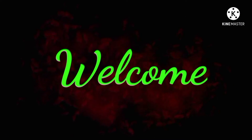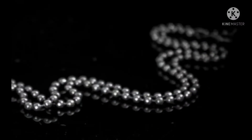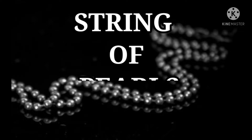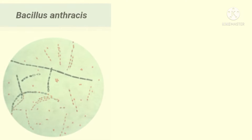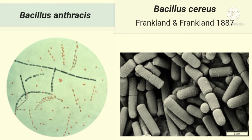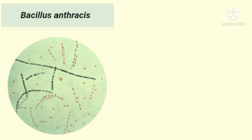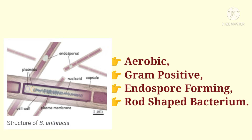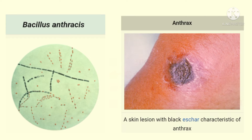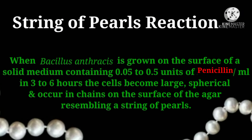Welcome. In this video we are going to see about the string of pearls reaction. The string of pearls reaction is used to differentiate Bacillus anthracis from Bacillus cereus and other aerobic spore bearers. Bacillus anthracis is an aerobic gram-positive endospore-forming rod-shaped bacteria that causes anthrax.